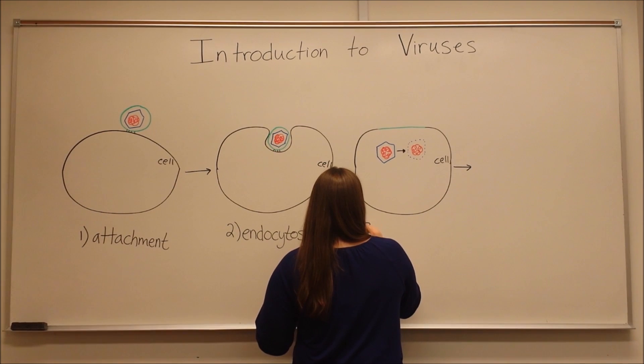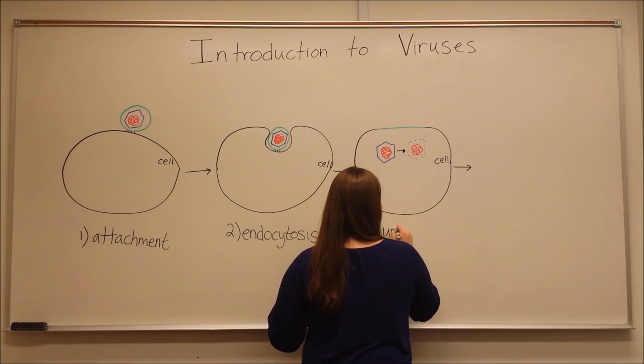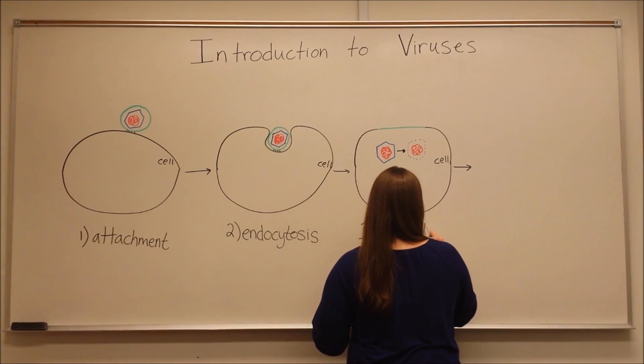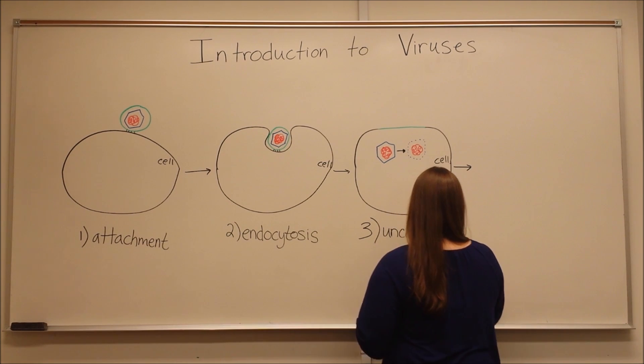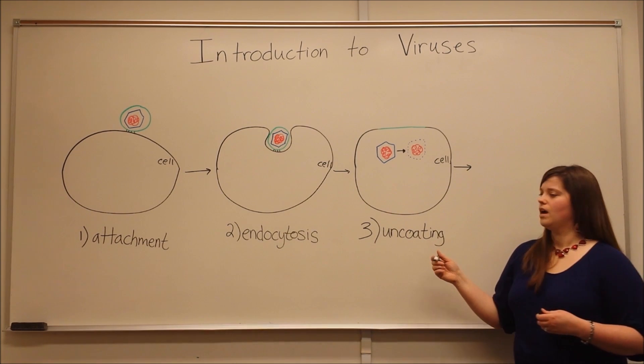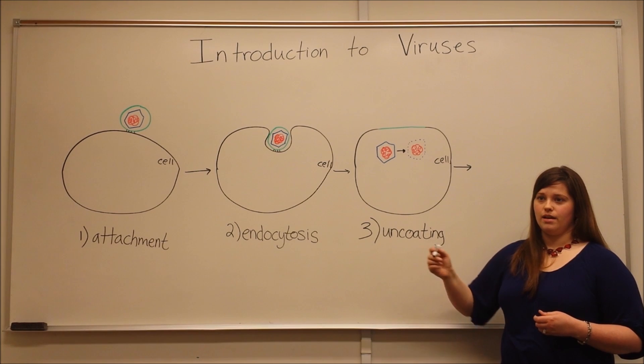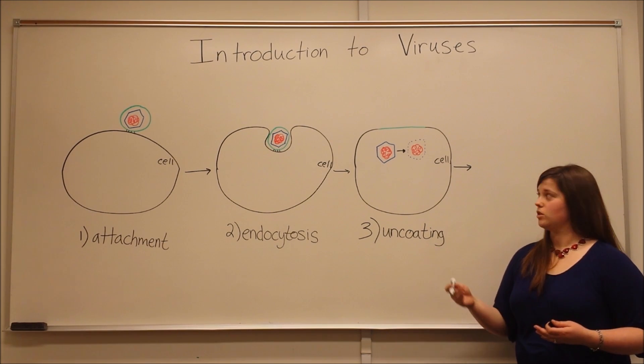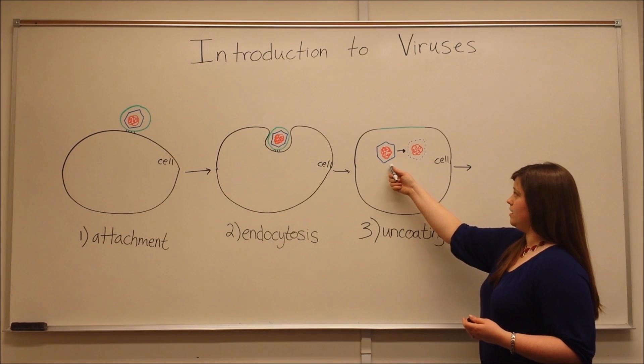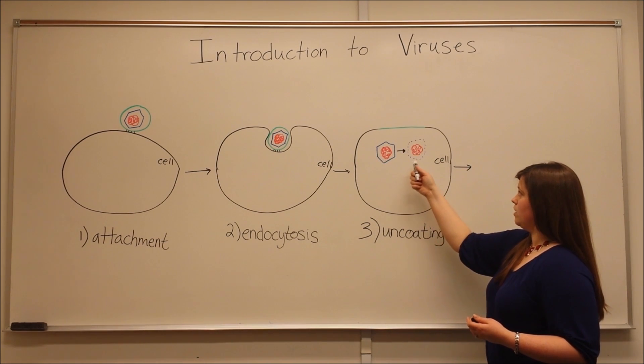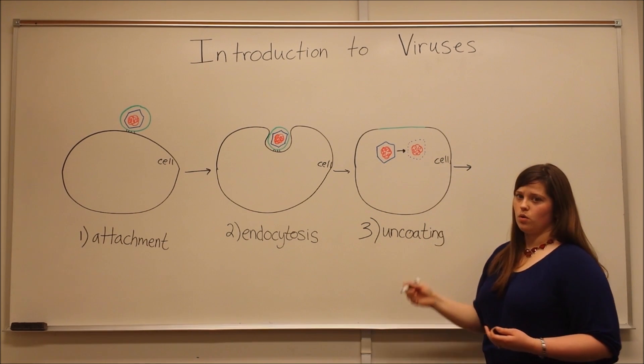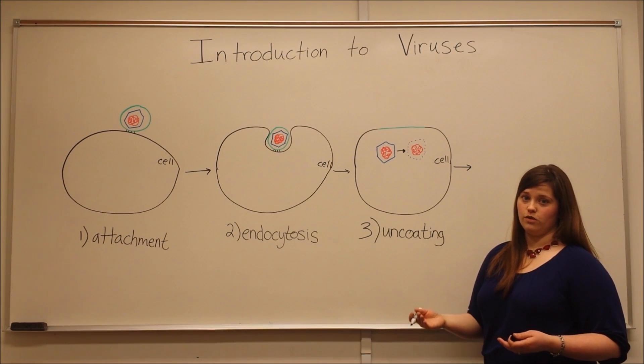The next step is uncoating. Uncoating is when host cell proteins are used to actually break down the capsid resulting in the nucleic acid core then being available for replication.